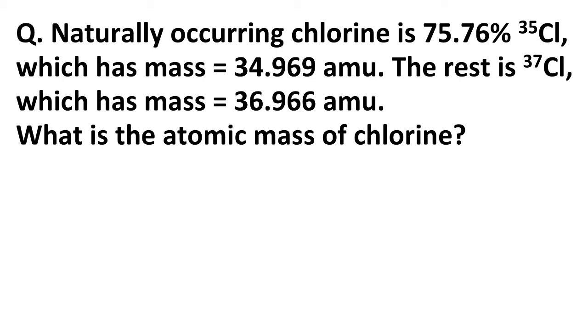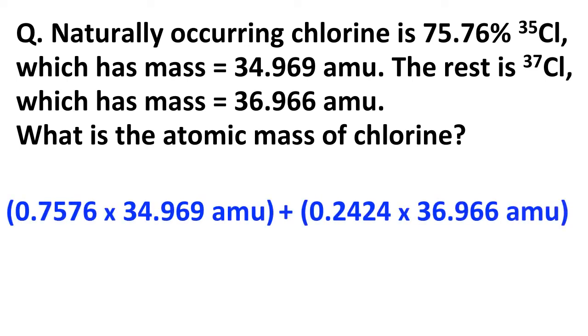So let's do one example with this in terms of calculation. Naturally occurring chlorine, which we just talked about, is about 75.76% chlorine-35. And that isotope has a mass of 34.969 AMU. And then the rest of the naturally occurring chlorine is chlorine-37. And that has a mass, those isotopes have a mass of 36.966 AMU. So what's the atomic mass of chlorine?